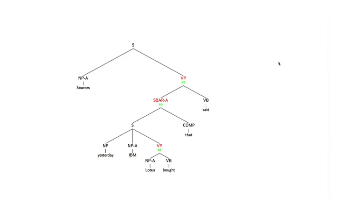But much of that complexity can be reduced if we have syntactic structures. What I've shown here is essentially a parse tree with the Japanese word order — so 'sources yesterday IBM Lotus bought that said.' Superficially that looks very, very different from the word order in English. But with these parse structures, you can actually recover the English word order by just rotating a few of these phrases within the tree. I've identified these three spots.